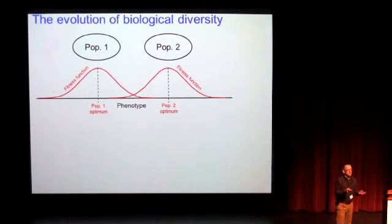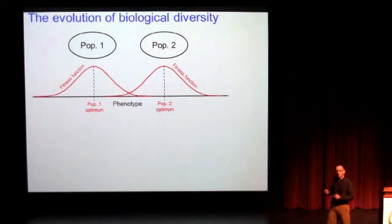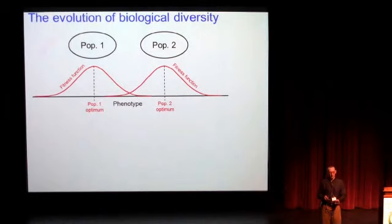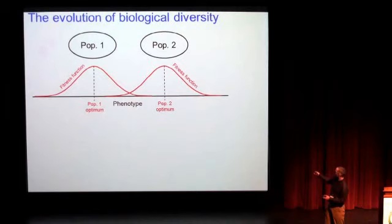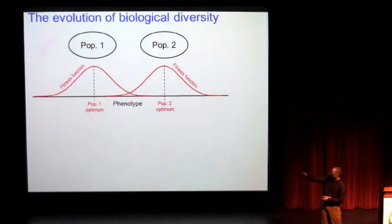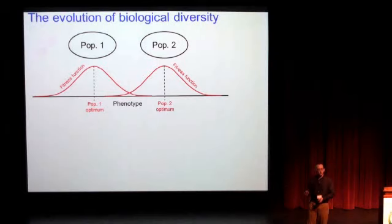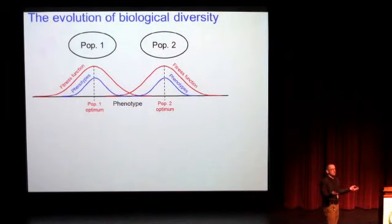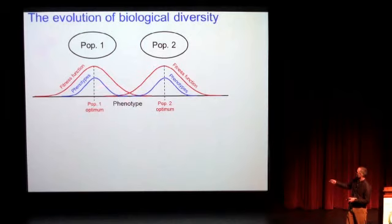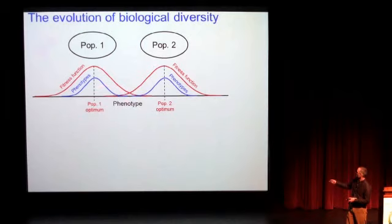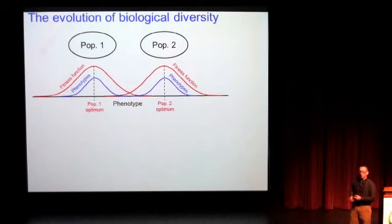Let me lay out a broad conceptual framework for how ecological speciation emerges from adaptation. We might start with the simplest way of thinking about adaptation: you have two environments, and a population in each one. These environments differ because there's a different relationship between the phenotypes of individuals and their fitness. In one environment, small body size gives highest fitness; in the other, large body size gives highest fitness. So selection favors different body sizes in the two populations, and given enough time, the distribution of phenotypes diverges to match those different fitness functions.